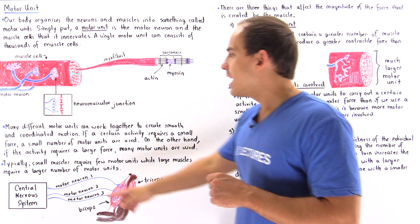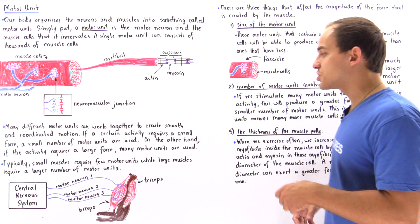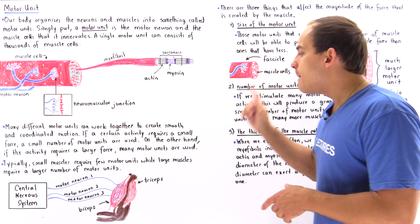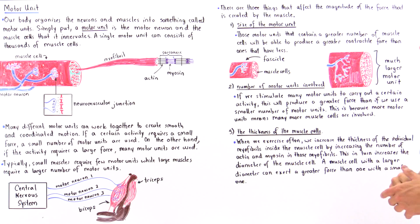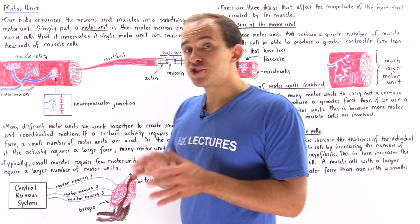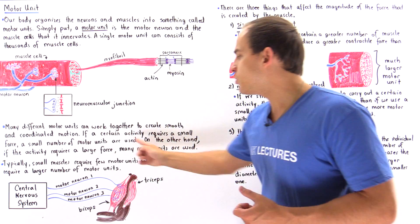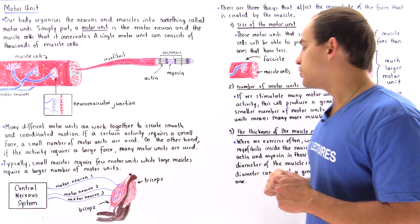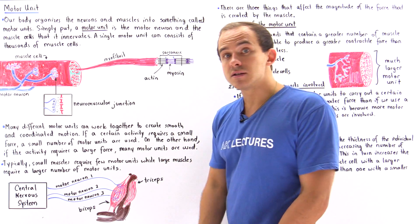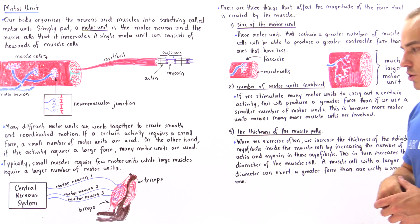On the other hand, if the activity requires a relatively large force — when, for example, we're lifting some type of heavy object — many motor neurons are actually used. Typically, small muscles like the muscles found in our fingers require few motor units, while large muscles like the muscles in our legs require a larger number of motor units.